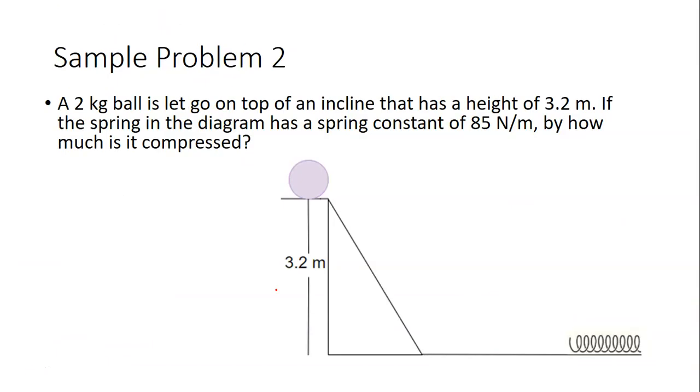We are going to do one more sample problem. A 2 kilogram ball is let go on top of an incline that has a height of 3.2 meters. If the spring in the diagram has a spring constant of 85 newtons per meter, by how much is it compressed?